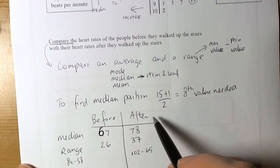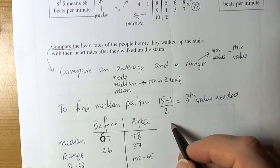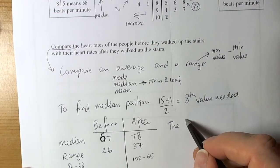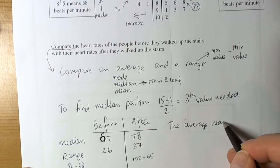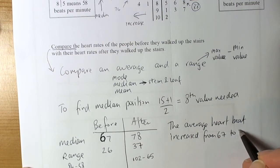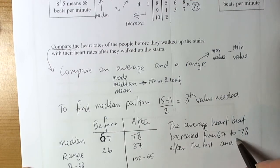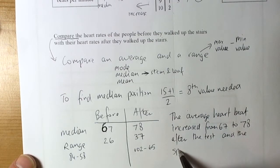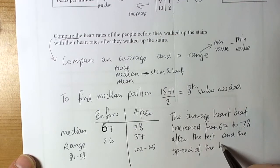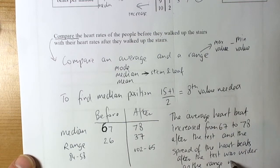So now we've got our data. We remember the question said compare. So we've done all the calculations. Fairly confident that once we've done checking that we've got the right numbers. And therefore we can compare. So basically we'd write something on a sentence. So we wanted to say the average heart speed increased from 67 to 78 after the test. And the spread of the heartbeats after the test was wider. And the spread of the heartbeats as the range was higher.